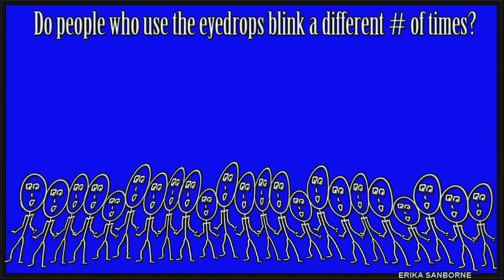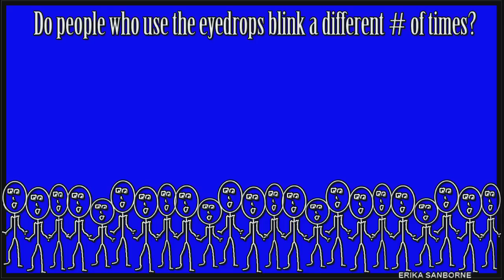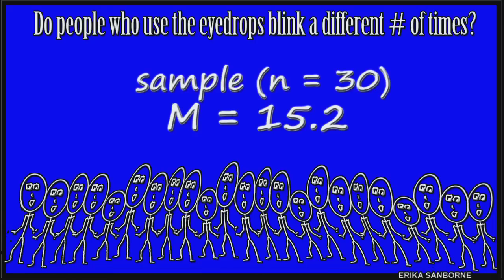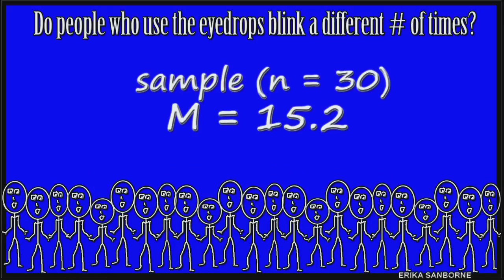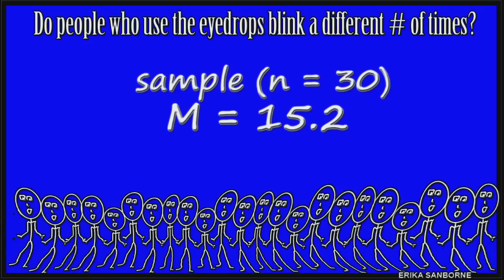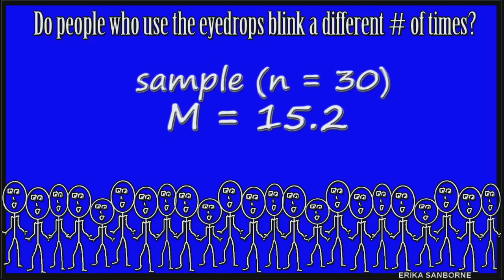Let's suppose we have a sample of 30 people who use the eyedrops to test them out for us. Aren't they nice? The sample used the eyedrops and their sample score was 15.2 blinks. Well, it's not 14. But is that sample mean different enough that we can actually say it's significant?